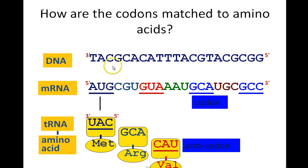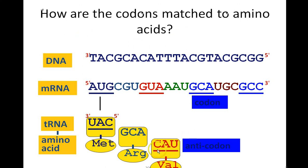If I give you DNA, messenger RNA, tRNA, or the amino acid, you should be able to figure out everything else. Now if I give you the amino acid, there's more than one way to get the messenger RNA and DNA sequence that codes for it. But you should be able to go back and forth between all of these.